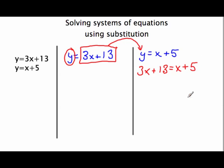From here we have a single variable equation that we can solve for x. We would subtract x on both sides of the equal sign. That gives us 2x plus 13 equals 5. We continue to isolate the variable by subtracting 13.